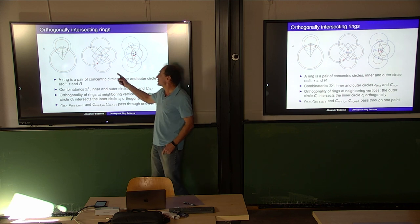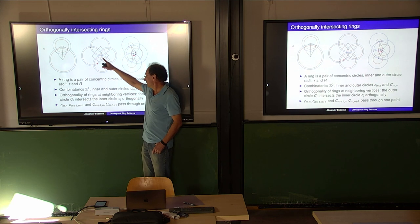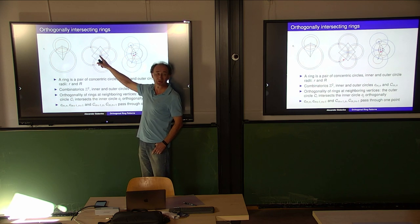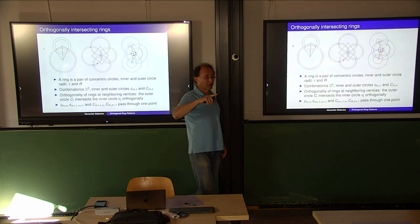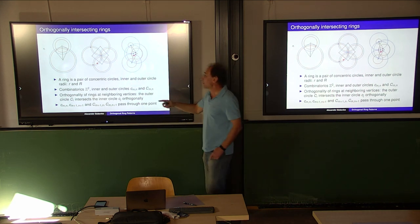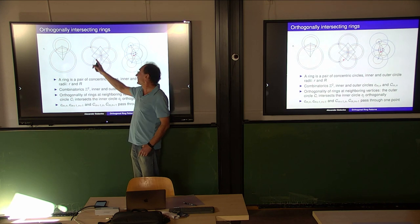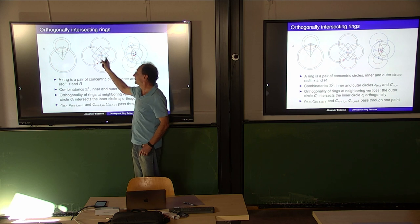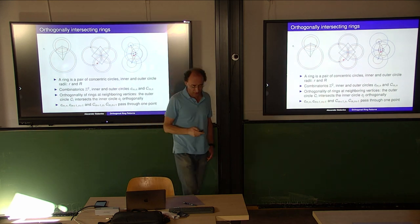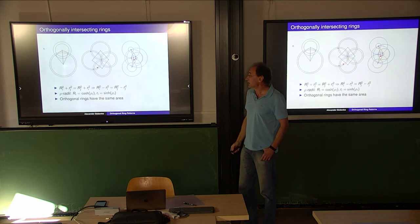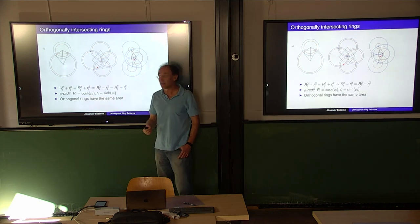You can observe that four circles pass through a common intersection point - the same situation as in circle patterns, but now we have more circles. For every point you have four circles meeting: two inner circles and two outer circles, in this direction and in this direction. That follows from the definition. Now let's look at the radii.